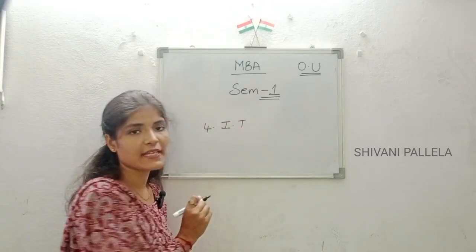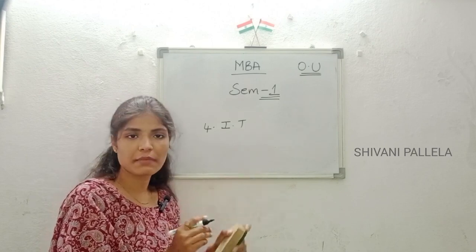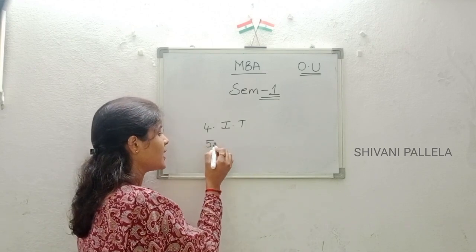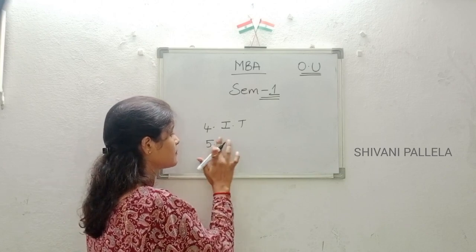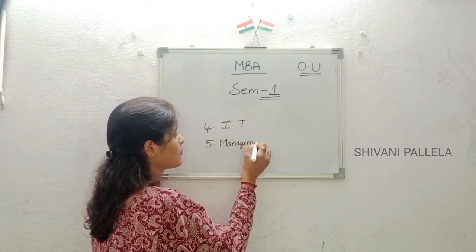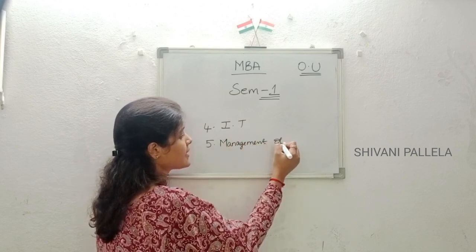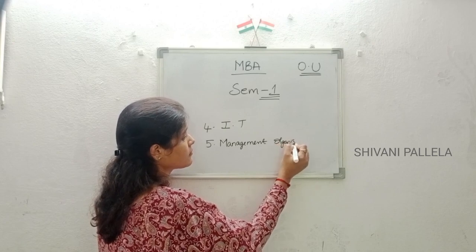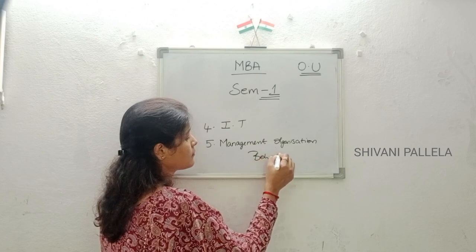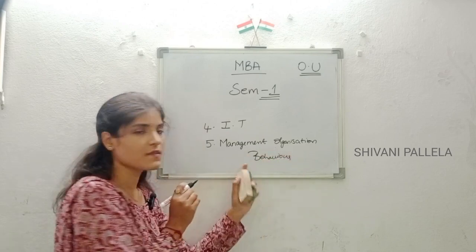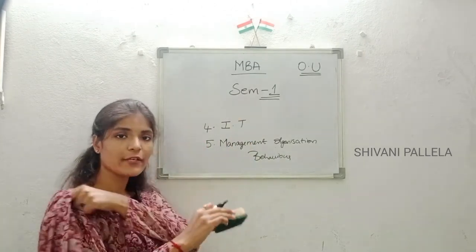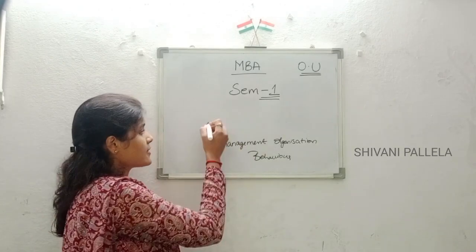The fourth subject is IT, that is Information Technology. This is the fourth subject in semester one of MBA. The fifth subject is Management Organization Behavior, the fifth subject under Osmania University.